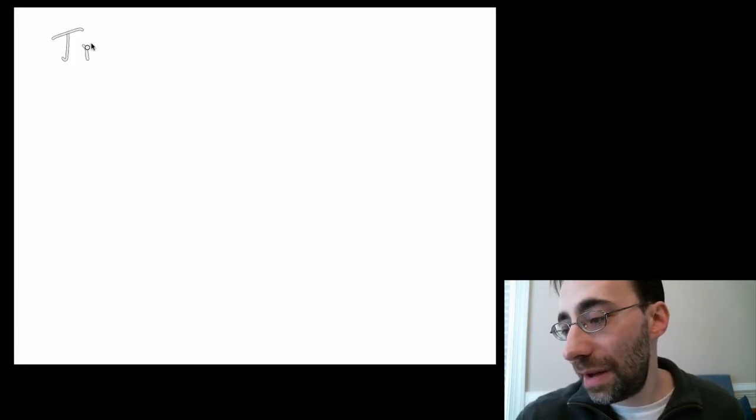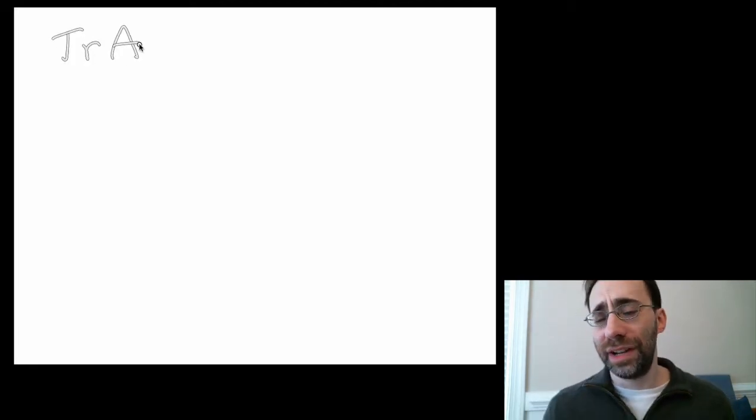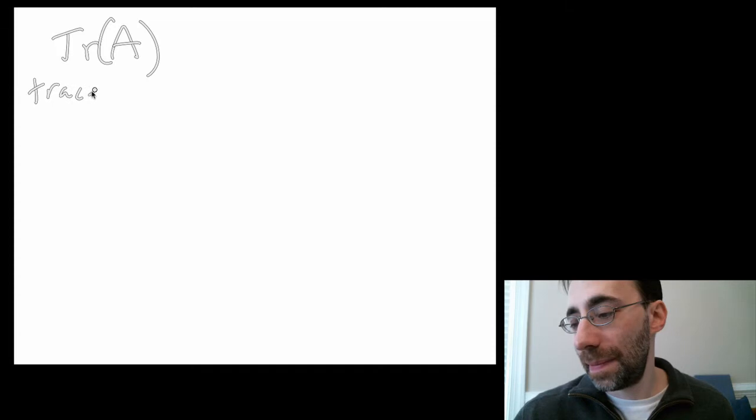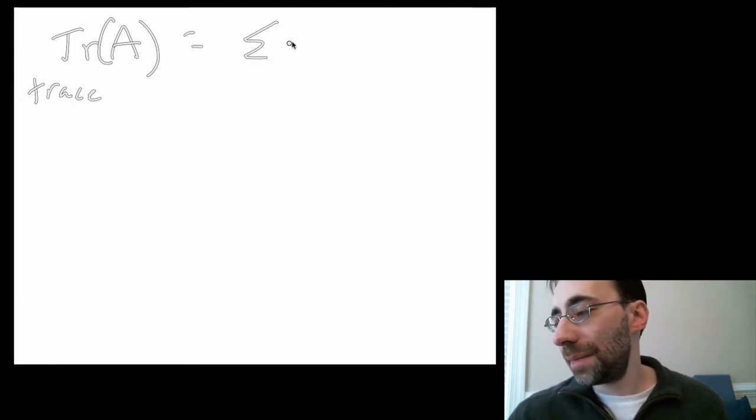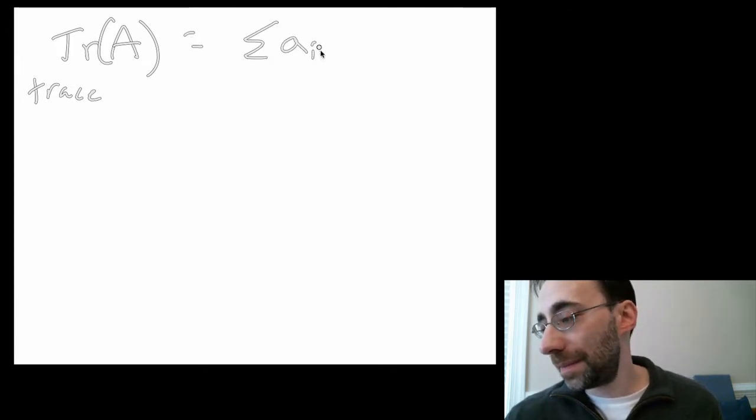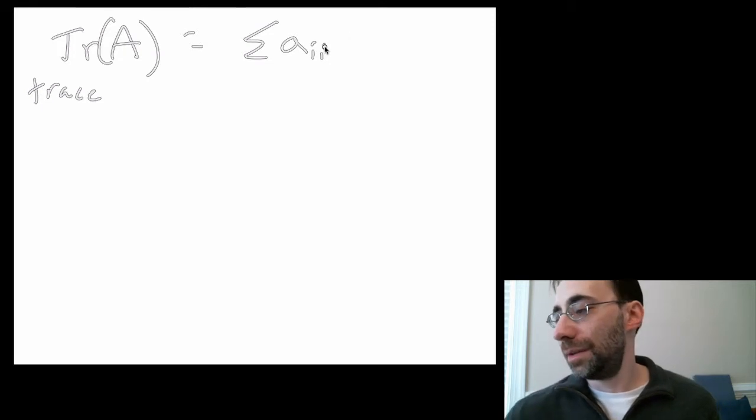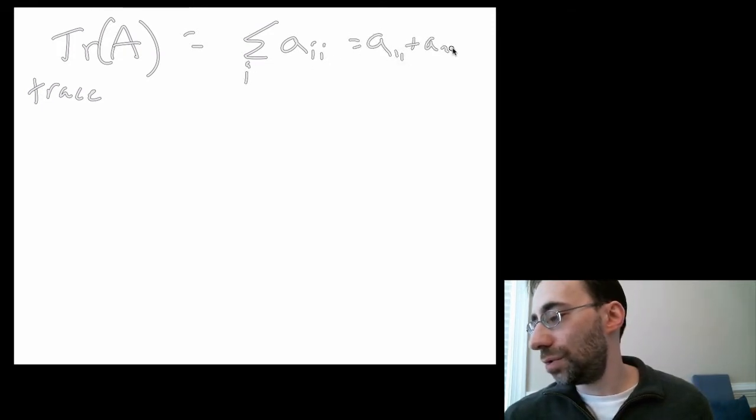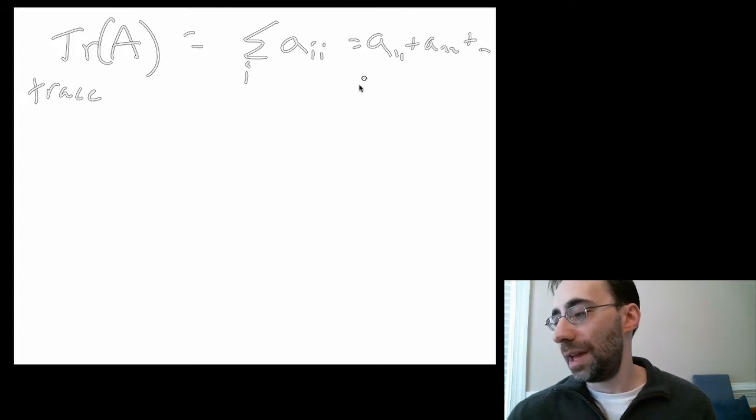The first you're going to see pretty rarely, but it's included here because it comes up sometimes when you're dealing with eigenvalues, and it's called the trace. The trace of a matrix A, almost always defined just for a square matrix, is the sum of all diagonal elements. So it's A11 plus A22, and so on, into ANN.